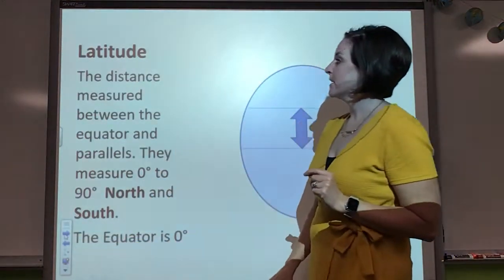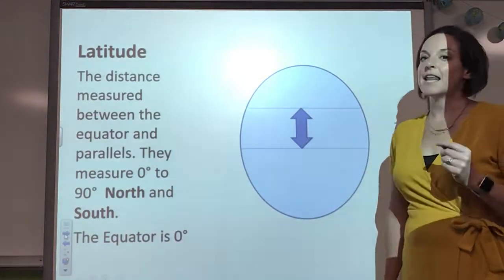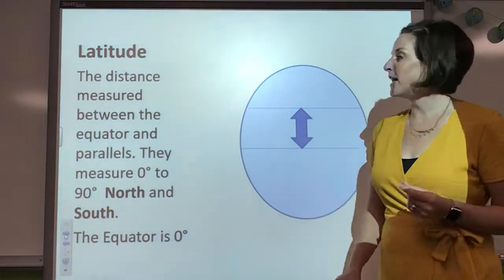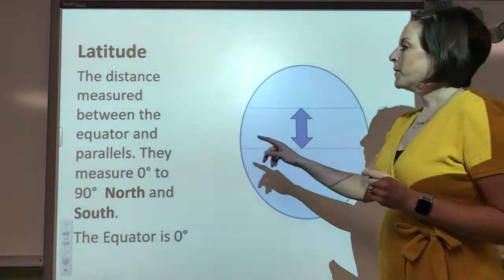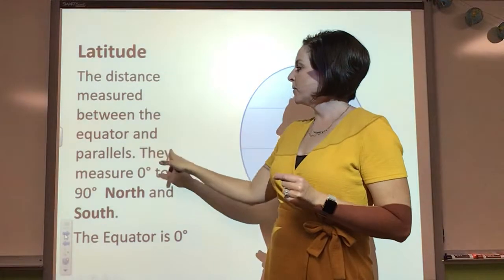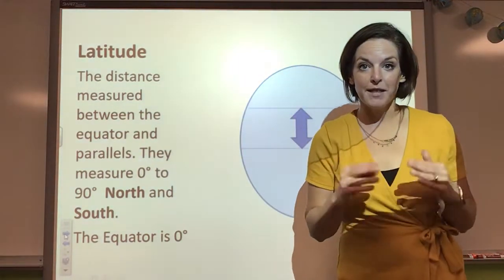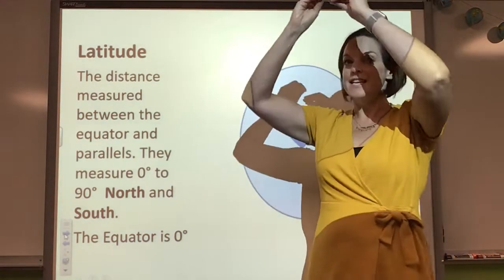And then we're going to measure zero to 90 degrees south. These lines are also called latitude lines. Latitude. So it's measured between the equator and then the parallel, the distance in between them. Zero degrees to 90.